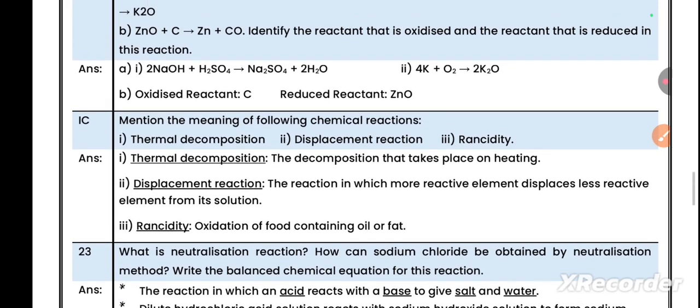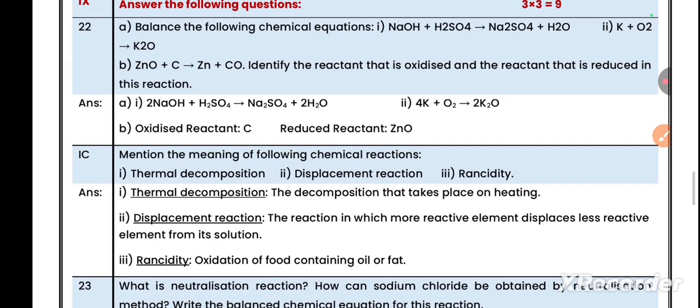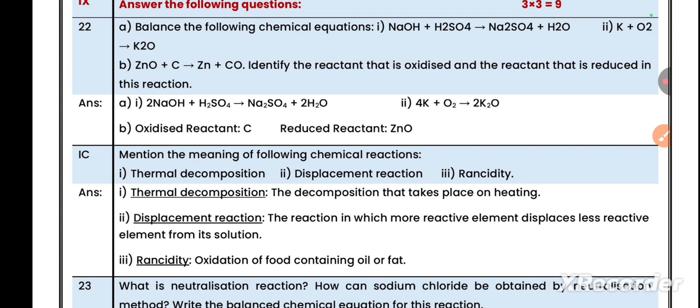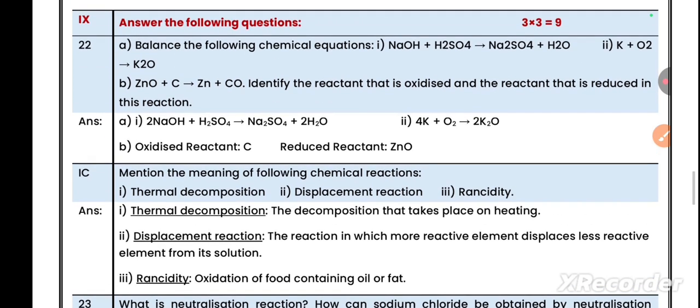Question B: Zinc oxide reacts with coke or carbon to give zinc and carbon monoxide. Identify the reactant that is oxidized and the reactant that is reduced. Whenever you are writing oxidized and reduced, must and should keep in mind we have to write on the basis of reactant side only, not on the basis of products. Here reactants are zinc oxide and carbon. Zinc oxide is reduced and coke is oxidized because it got oxygen and turned into carbon monoxide.